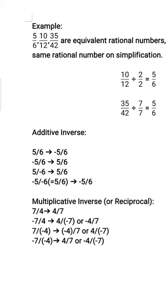Coming to the fourth type: minus 5 by minus 6. Here both denominator and numerator are negative. Both negatives cancel out each other, so basically this number is nothing but 5 by 6 — it is a positive rational number. So obviously when we find its additive inverse, we will get minus 5 by 6, because changing the sign of a positive rational number gives a negative. So the additive inverse of minus 5 by minus 6 is minus 5 by 6, since when both are negative the rational number is basically positive.